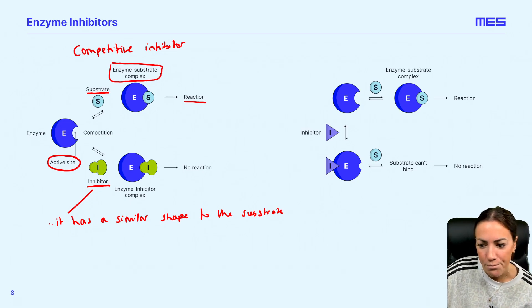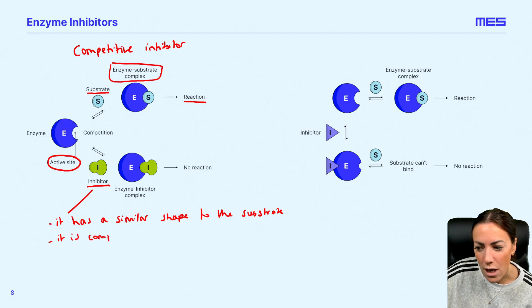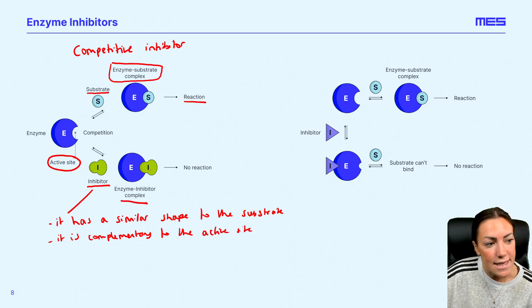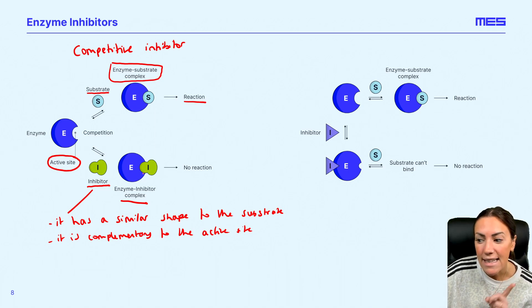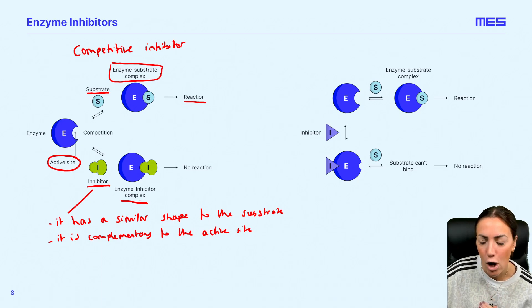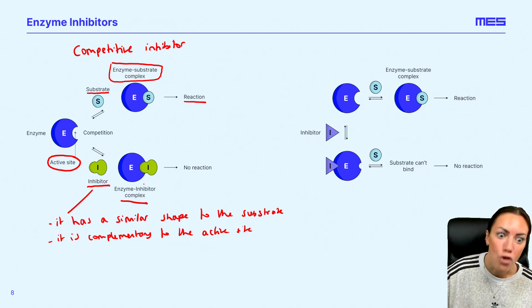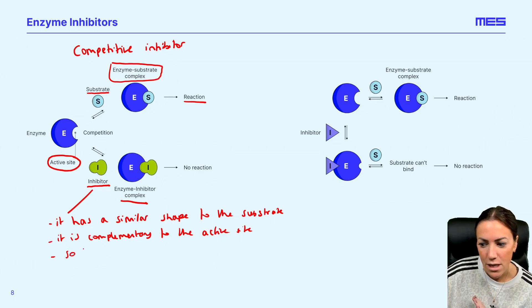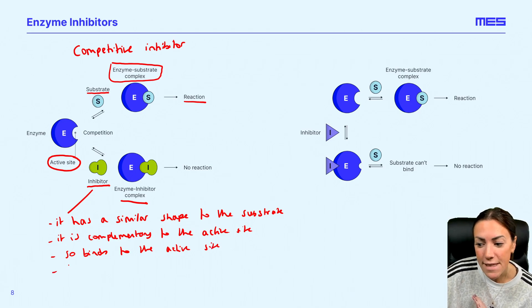The inhibitor must have a similar shape because it is also complementary to the active site. We can see on the diagram that it's complementary to the active site and the inhibitor can bind to the active site — we refer to that as an enzyme inhibitor complex. So the competitive inhibitor has a similar shape to the substrate, is complementary to the active site, and this will physically block the substrate from binding.